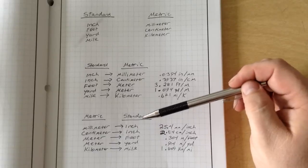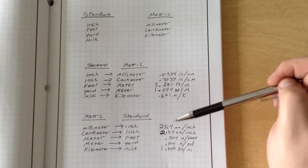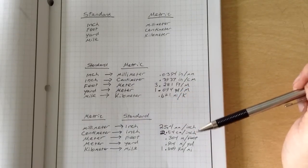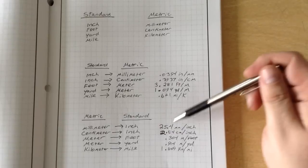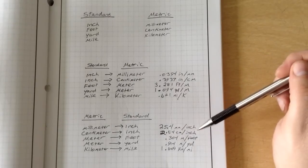Now also, it works the other way. So millimeters to inch, there are 25.4 millimeters in every inch. Centimeters to inch, there are 2.54 centimeters per inch.